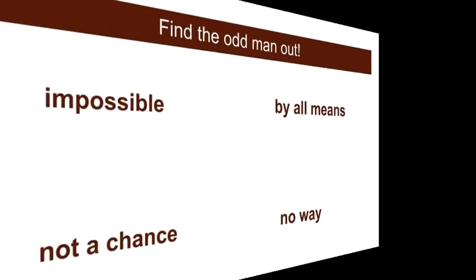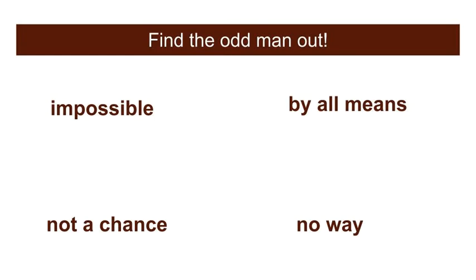One question for a quiz. There are four phrases. Which is different in the comments? Find the odd man out. Impossible, by all means, not a chance, no way. What is different in the comments?